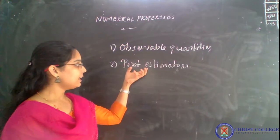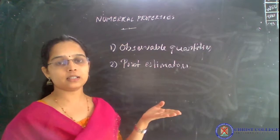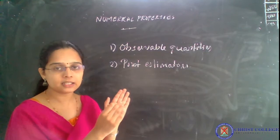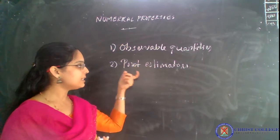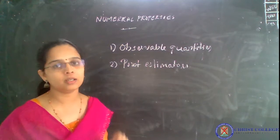Rather than point estimators, there is another set called interval estimators, where there will be a range of specific values within which our estimator will lie. We are not considering interval estimation for now — we will come across interval estimation in the coming process. So the least square estimators are point estimators, giving a single estimated value.